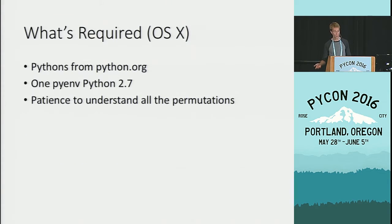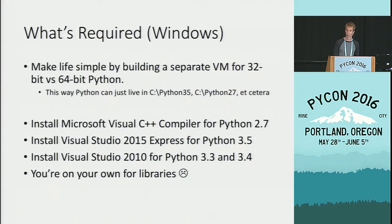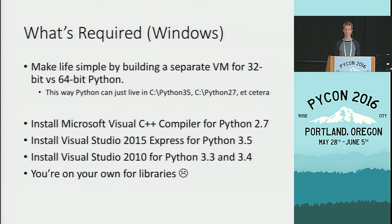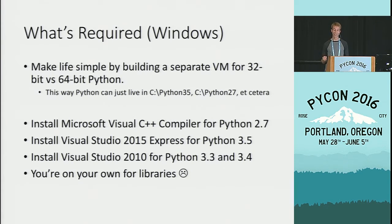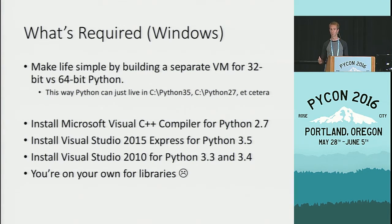To recap, what's required to cover OS X users: pythons from python.org, one pyenv Python 2.7, and the patience to understand all these permutations. On Windows, build a separate VM for 32-bit and 64-bit Python — tools like Tox have expectations about where they'll find Python, and it will make your life much easier to let them have their way. You'll need to install all the different compilers, and unfortunately you'll need the non-free version of Visual Studio 2010 for the 64-bit build.